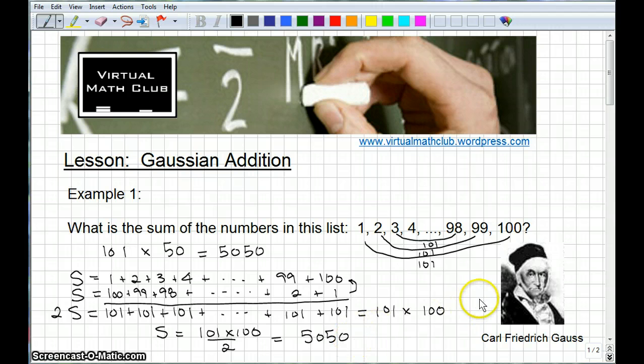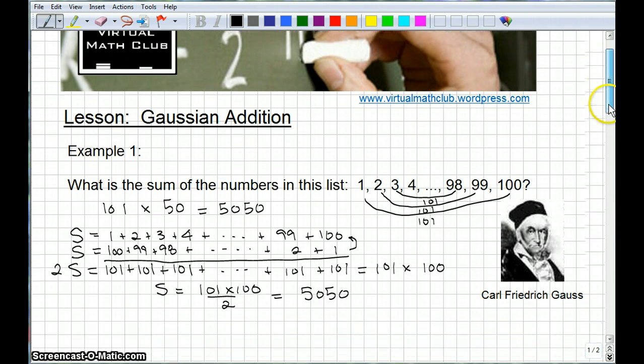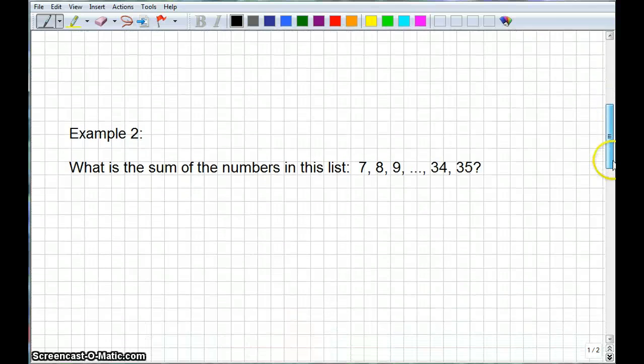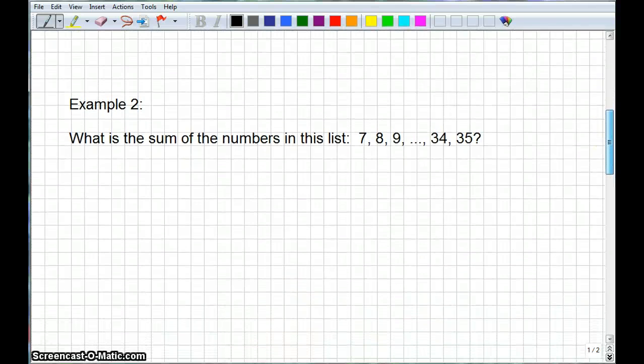So, let's see if we can use that information to do some more problems. Let me scroll down here. Let's take a look at this example. What is the sum of the numbers in this list? 7, 8, 9, all the way up to 35.